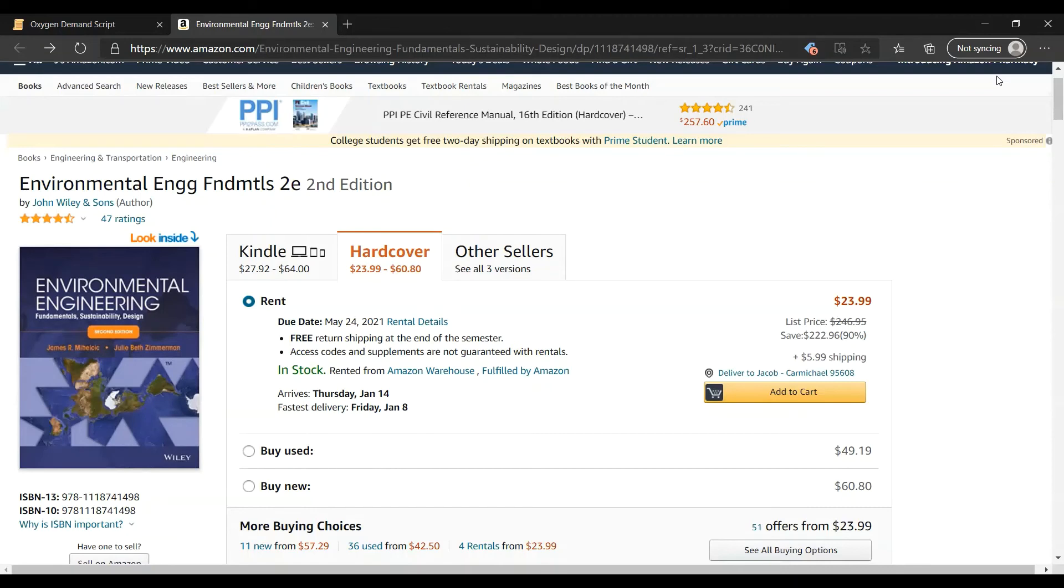The textbook that I used for this topic and some of the example problems was James Mihelcic, probably saying that wrong, and Julie Zimmerman's Environmental Engineering Fundamentals, Sustainability, Design. And I recommend it as a good source if you need any further help. I'll put a link to it down below. I will also link down some other sources that I think are good too. If this video was helpful, please give it a thumbs up. I will be coming out with another video on the kinetics of oxygen demand to explain the calculations that involve reaction rates, so you don't want to miss out on that. Until then, study hard.